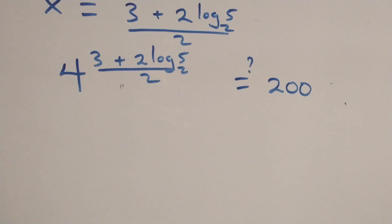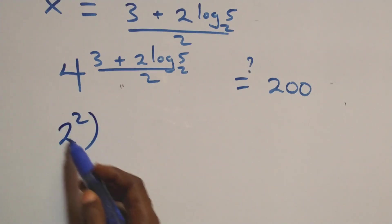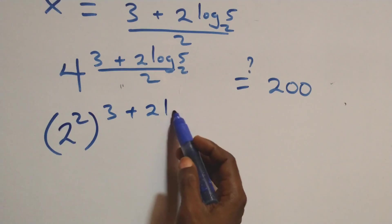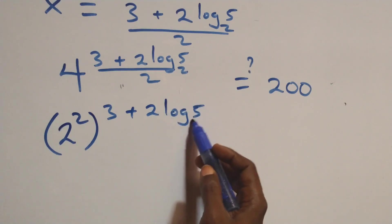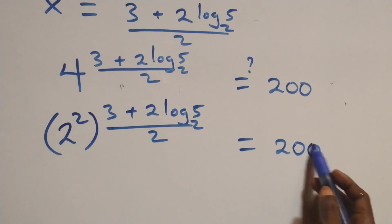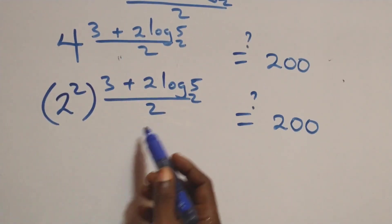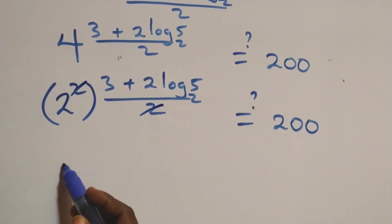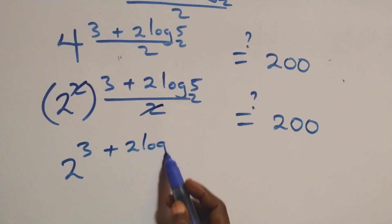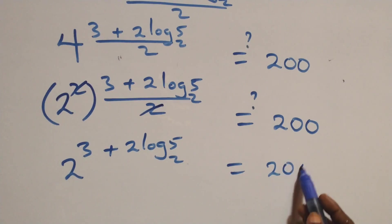To verify, we substitute x into the original equation: 4 raised to power (3 + 2 log 5 − 2)/2 equals 200. We express 4 as 2 squared, giving 2 squared raised to power (3 + 2 log 5 − 2)/2 equals 200. The 2 in the exponent and the 2 in the denominator cancel, leaving 2 raised to power (3 + 2 log 5 − 2) equals 200.